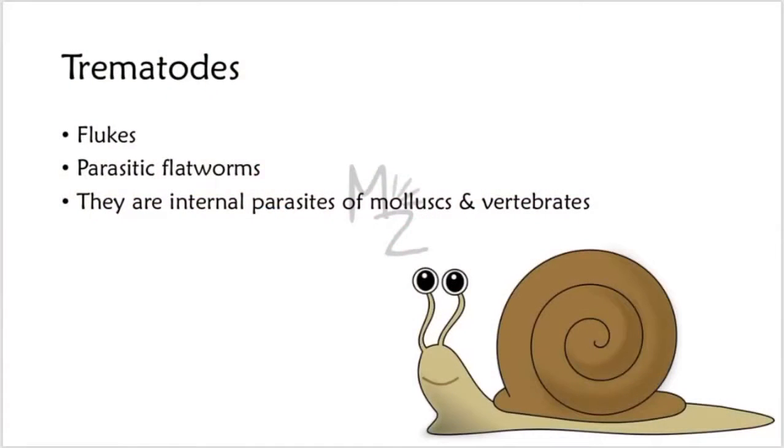Let's get into it. Trematodes, these are flukes, parasitic flatworms. They are internal parasites of mollusks, for example, snails, and vertebrates, for example, human beings.